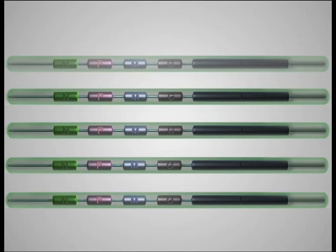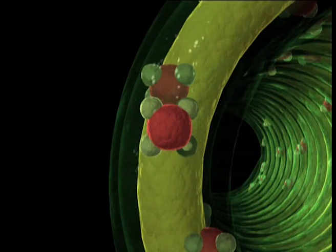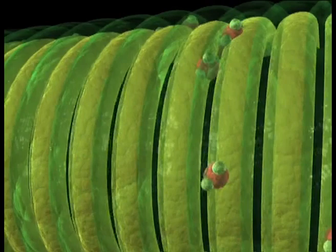Once enough encapsidated progeny genomes have accumulated, they can be used as templates for secondary transcription. This new strand can already pick up some newly made L and P proteins and become ready for assembly into a progeny virus.